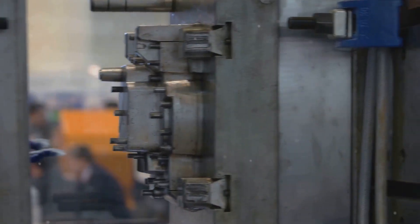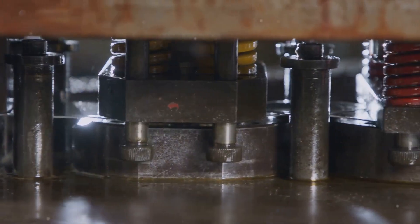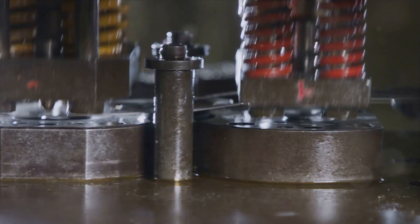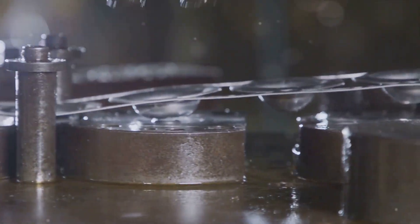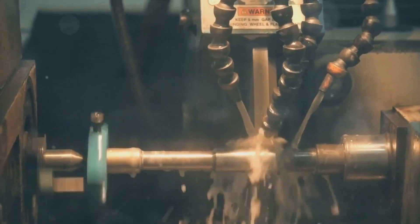Next in line is the knurling machine. This is the artist of the plant, lending texture and grip to otherwise smooth surfaces. By etching intricate patterns onto components, it enhances both functionality and aesthetics in one fell swoop.